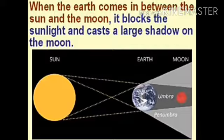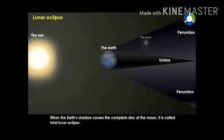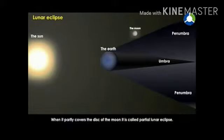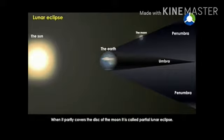During a lunar eclipse, the Earth blocks sunlight and casts a large shadow on the moon. When the Earth's shadow covers the complete disk of the moon, it is called a total lunar eclipse. When it partially covers the disk of the moon, it is called a partial lunar eclipse.